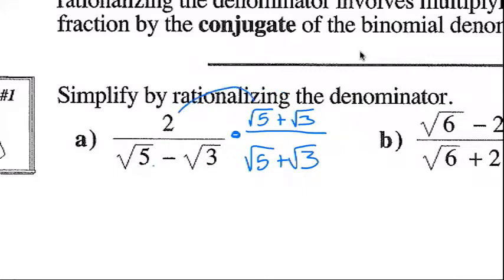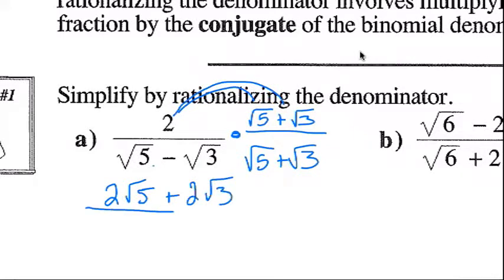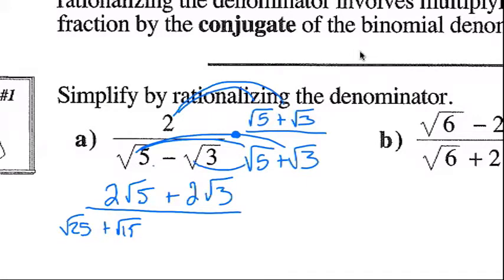2 times square root 5 is 2 square root 5. 2 times square root 3 is plus 2 square root 3. All over: square root 5 times square root 5 is square root 25. Square root 3 times square root 5 is square root 15. Minus square root 3 times square root 5 is minus square root 15. And minus root 3 times plus root 3 is minus square root 9.